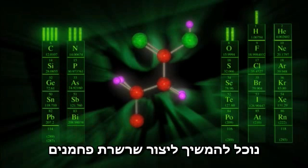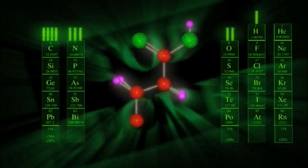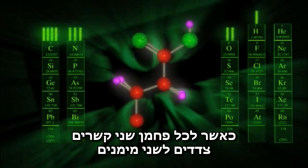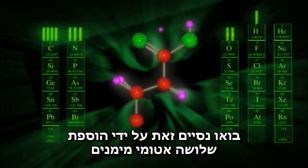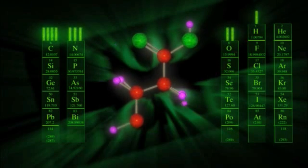We could keep going, making a chain of carbons, with each carbon having two side bonds to hydrogen. But let's end it by adding three hydrogen atoms, like this.